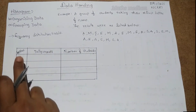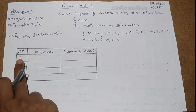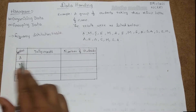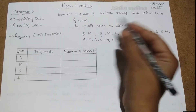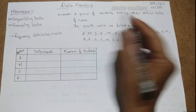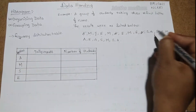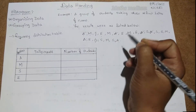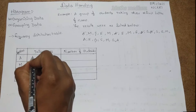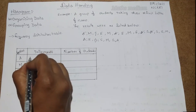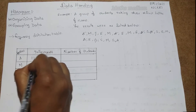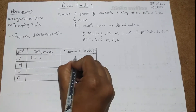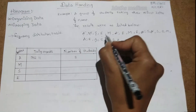The frequency distribution table may vary with the subject — letters, balls, cars, books, etc. For A: counting them — one, two, three, four, five, six, seven — so the number of students with first letter A is seven.